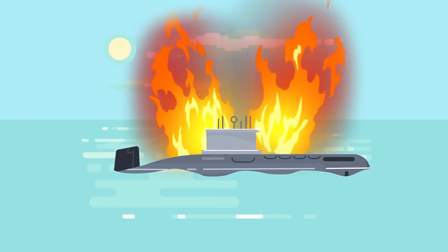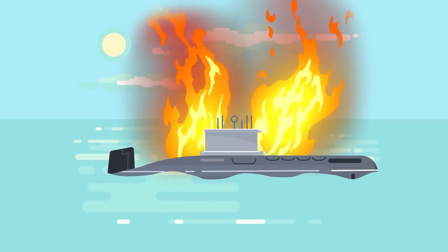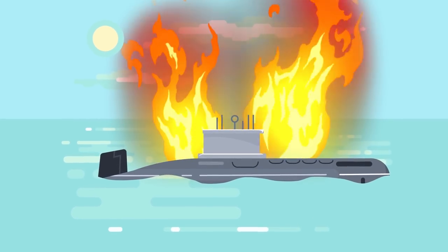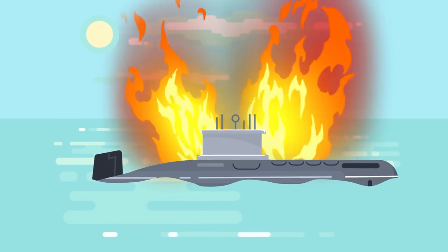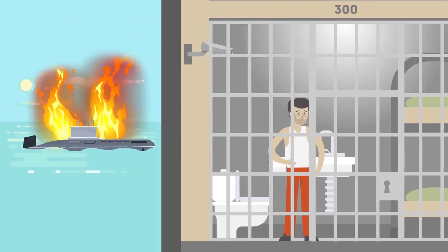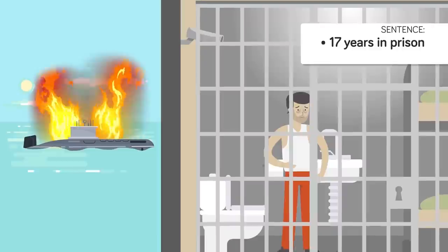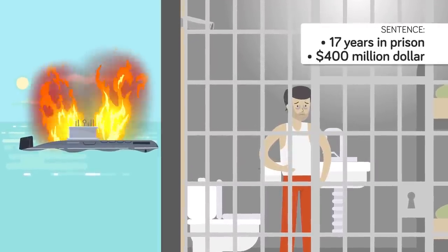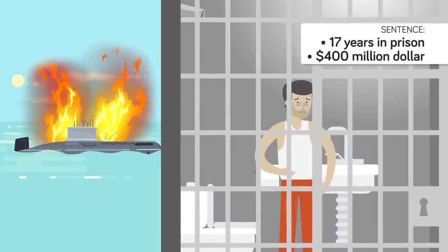37. In May 2012, a dock worker wanting to get out of work early started a fire aboard the moored USS Miami, which consumed the forward section of the sub. The worker was sentenced to 17 years in prison and fined $400 million, which we're sure he promptly paid off.